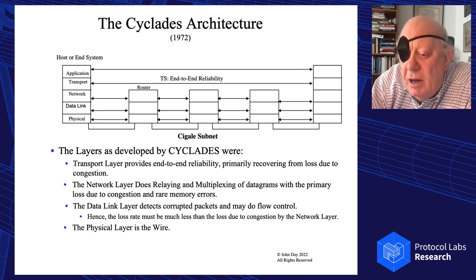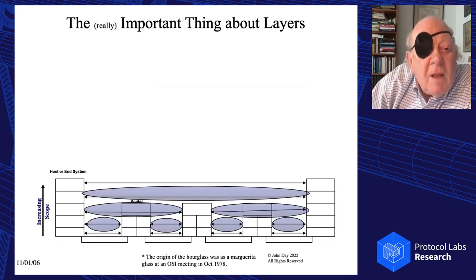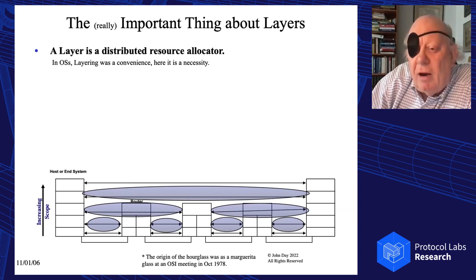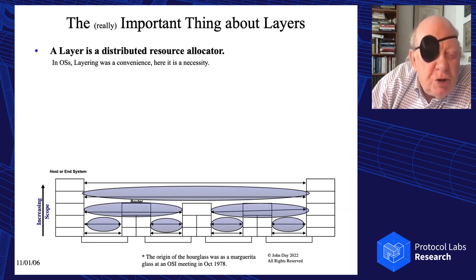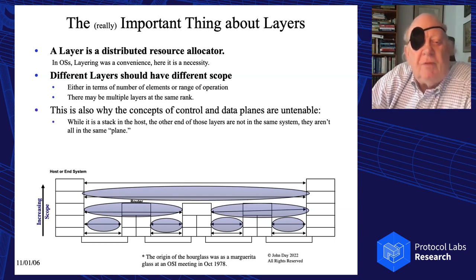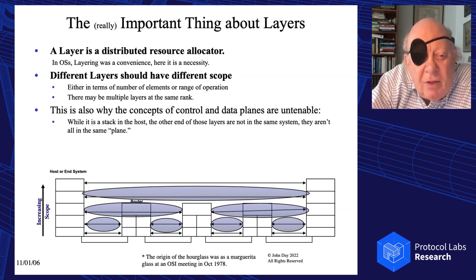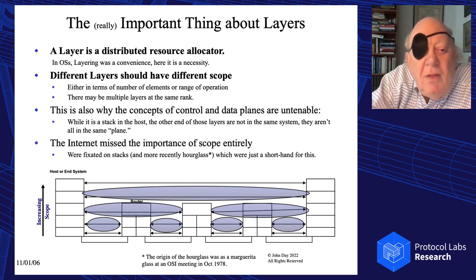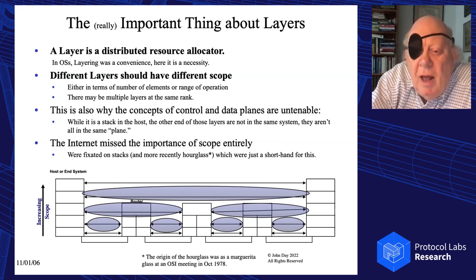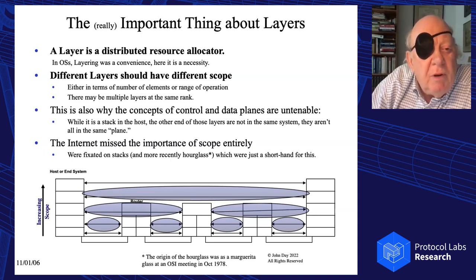Layers in the network are not a decomposition of functions within a single system, but distributed shared state across systems — this is what Cyclades really figured out. The most important property of a layer is its scope. A layer is a distributed resource allocator; different layers have different scope. This is also why the concept of controlling data planes becomes untenable: while it is a stack in the hosts, the other ends of these layers are not in the same system. The internet missed the importance of scope entirely.